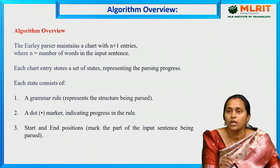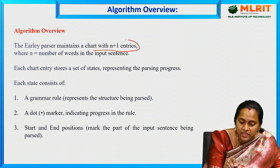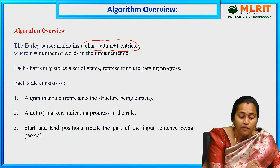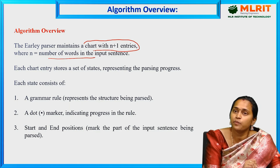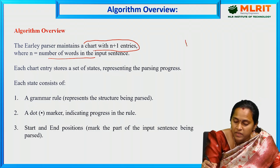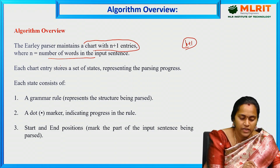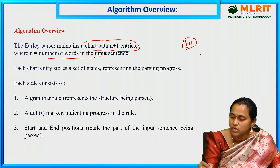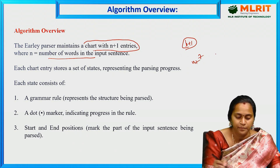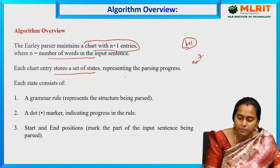The algorithm overview: the Earley parser maintains a chart with n+1 entries, where n is the number of words in the input sentence. For example, if the sentence contains 7 words, n equals 7. Each chart entry stores a set of states representing the parsing progress.